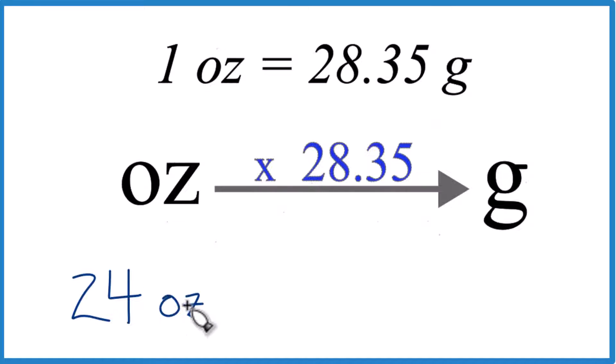So we have 24 ounces, we want to get to grams. So ounces to grams, we multiply by 28.35. If you had grams and you want to go to ounces, you could divide by 28.35.